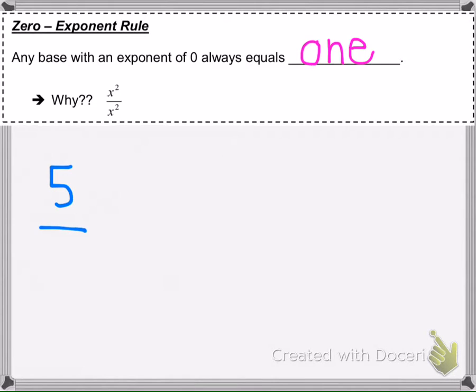If we had x squared over x squared, let's think about if we had 5 over 5. What would that equal? Five divided by itself. Anything divided by itself is always one.